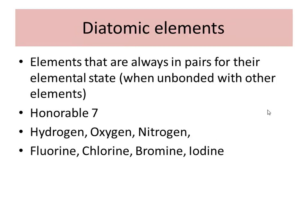Diatomic elements are elements that always exist in pairs in their elemental state. Basically, when they're not bonded with other things, they're always together. I call them the Honorable 7 — H-O-N for hydrogen, oxygen, nitrogen, then fluorine, chlorine, bromine, and iodine. If you look at the periodic table, they kind of make the number 7. N-O-F-Cl-Br-I make the number 7, including hydrogen. That's one way you can remember them.